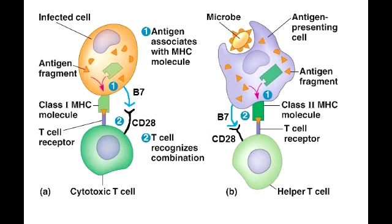Also, in the picture here, you can see the co-stimulatory signal. This co-stimulatory signal is given by the interaction of B7 and CD28, which makes up the second signal. When both of these signals are achieved, it will lead to activation of both T helper cells and cytotoxic T cells. The T helper cell is now able to produce cytokines, whereas the cytotoxic T cell is able to recognize and kill virus-infected cells.